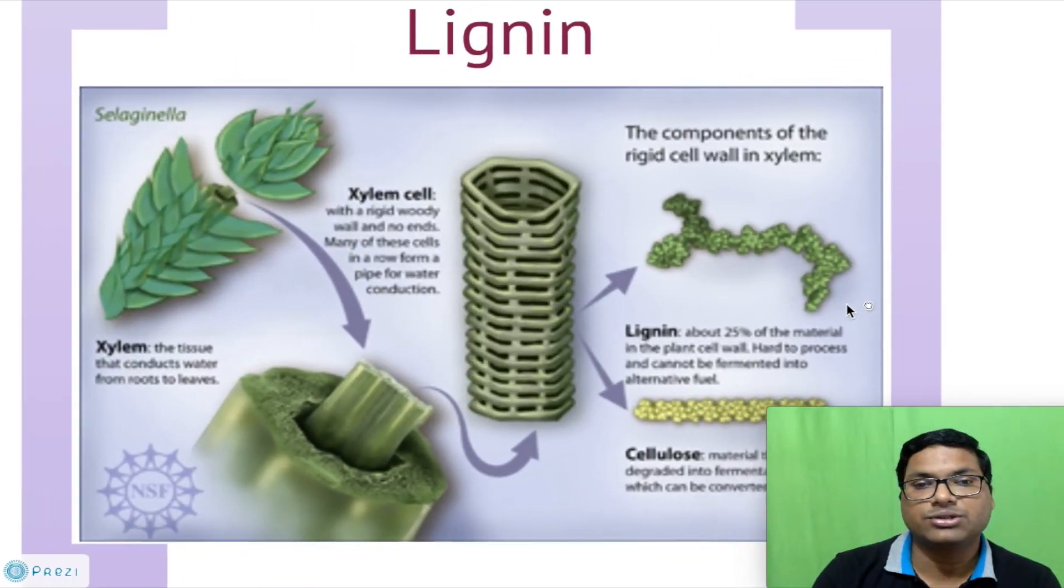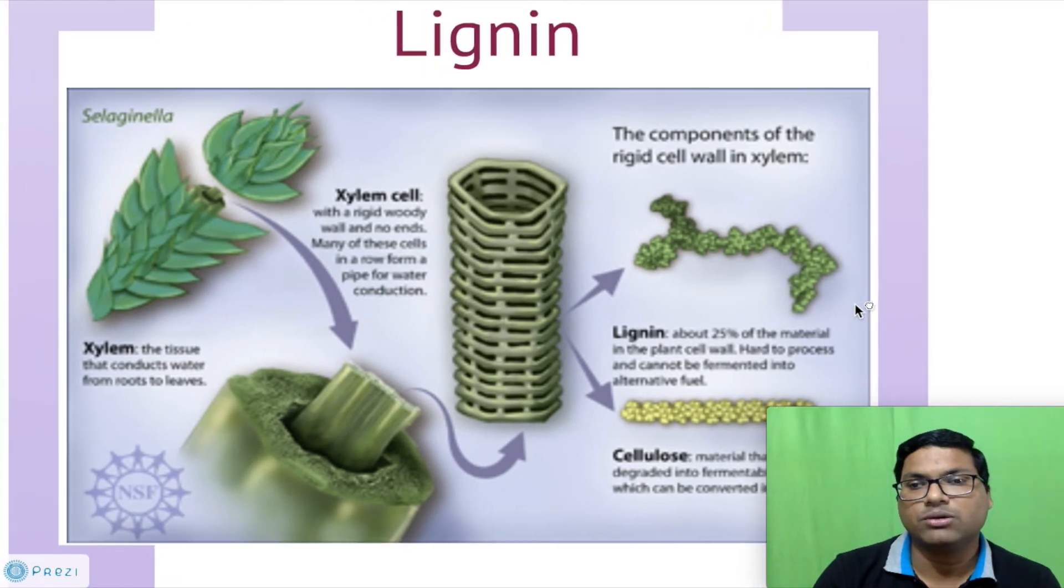Then coming to the next polysaccharide present in the cell wall is called as lignin. When you cut this plant, you can see this. This is xylem, you know it is involved in the transport of water. So this xylem is made up of lignin as well as these cellulose that we have just seen.